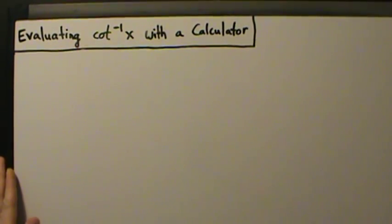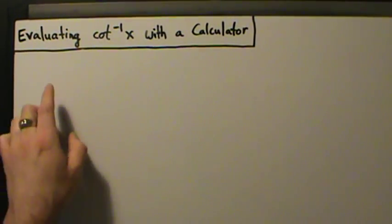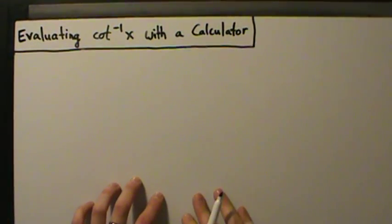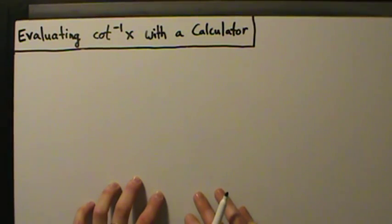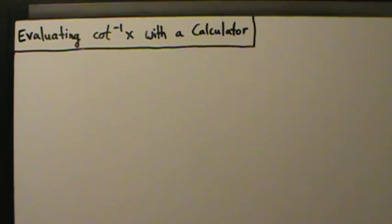Now that we talked about how to evaluate the inverse secant and the inverse cosecant functions with the calculator, let's talk about how to evaluate the inverse cotangent function with the calculator. We're going to start this the same way we started the previous two videos, but we'll see it ends up being a little bit different. We'll talk about why it's different, why that might be a slight issue, and then why it's not actually a problem and what we can do about it.